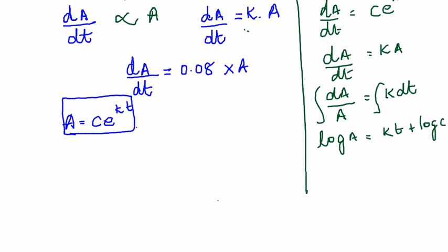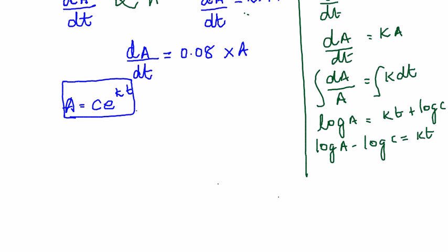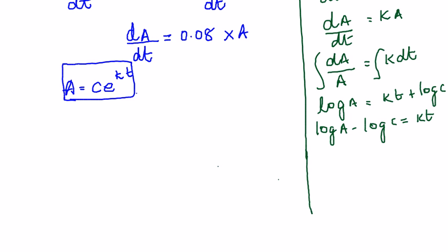And then we're going to write this as log A minus log c is equal to kt. If you already know this step you can ignore and fast forward to the next step, but this is in case for people who don't know. So log of A minus log of c can be written as log of A by c, by logarithmic rules, is equal to kt.